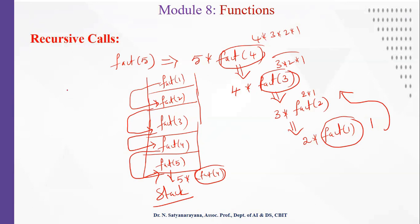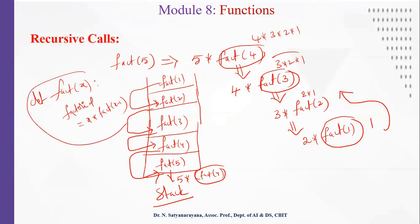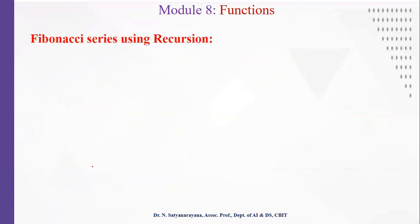Unfortunately, if you write the recursion without a base case — for example, defining factorial of x as x times factorial of x minus 1 with no stopping condition — the recursion becomes infinite. This will give a runtime error because you will be pushing an infinite number of function calls onto the stack, and the stack memory is not large enough to accommodate all those function calls. So one has to be very careful about the recursion.